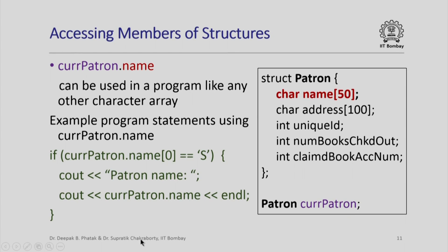Here is a program statement using 'current_patron.name' as a character array: it says that if the first character in 'current_patron.name' is capital S, then we print 'patron name' and then print out the entire member name of the object current_patron. Note that the usage of 'current_patron.name' here is just like that of any other character array — I can access the zeroth element, compare it with another character, and print out the entire string.